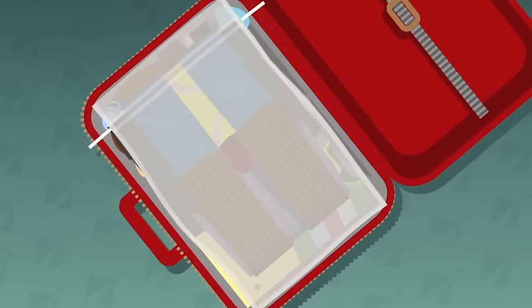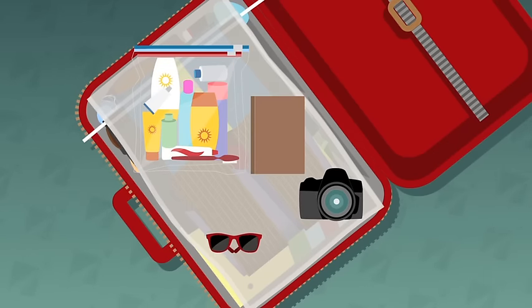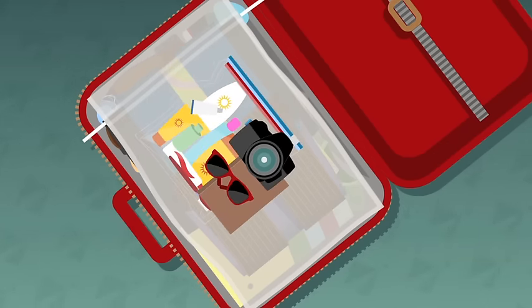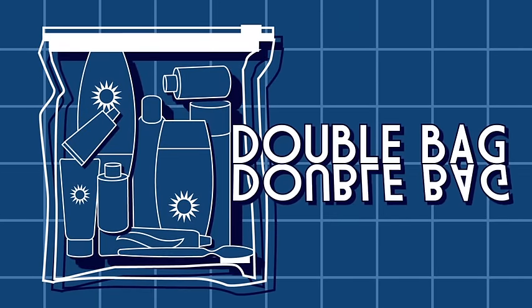Next up, non-clothing items such as toiletries, books and cameras. These awkward shaped objects should be placed towards the middle to give maximum protection. Remember to double bag your toiletries to ensure stain free clothes and gunk free cameras.